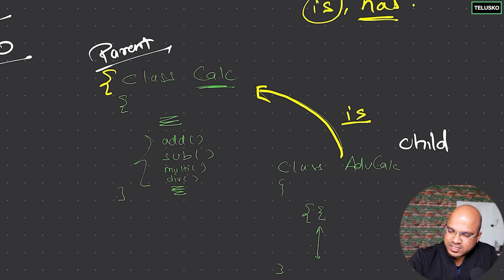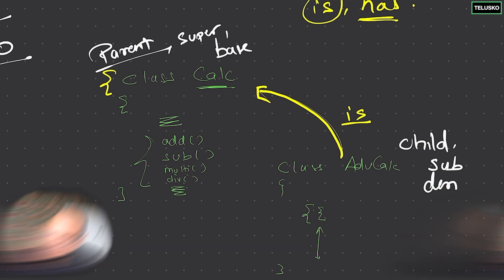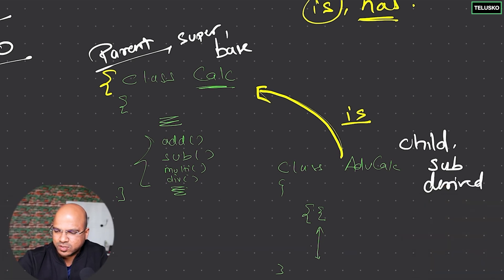We can also say this is a super class. We have different words for it. And we can say this is a subclass. We can also say this is a base class, and this is a derived class. So it depends upon how you represent that. If you say this is a parent class, then you have to say it's a child class. If you say that's a super class, then it becomes a subclass. If you say this is a base class, you have to say this is a derived class. That's how it works.